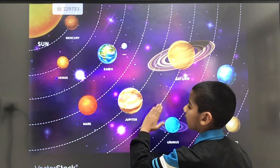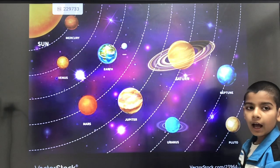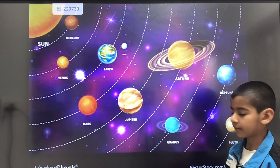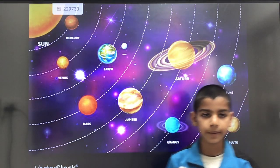After the asteroid belt, Jupiter, Saturn, Uranus, and Neptune are Jovian Planets or Gaseous Planets. These four are Outer Planets.